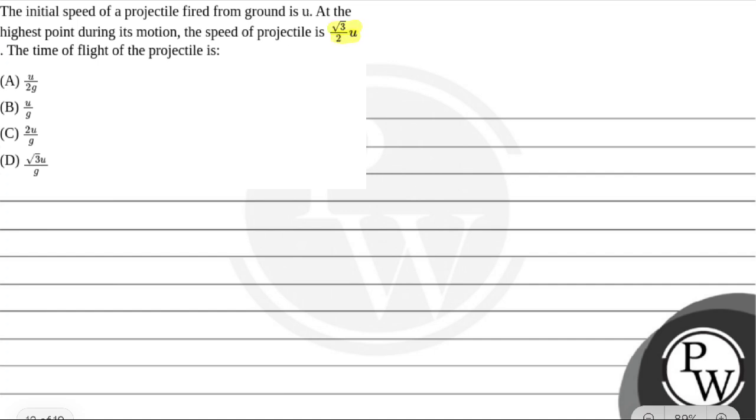The options are (A) u/2g, (B) u/g, (C) 2u/g, and (D) √3u/g. The key concept used here is projectile motion.